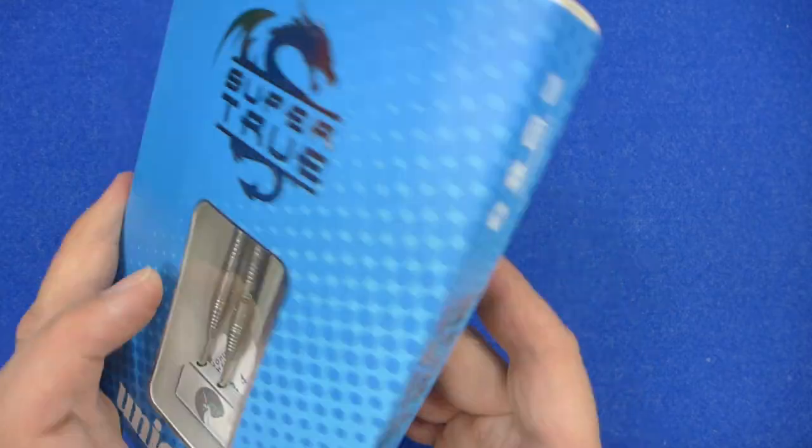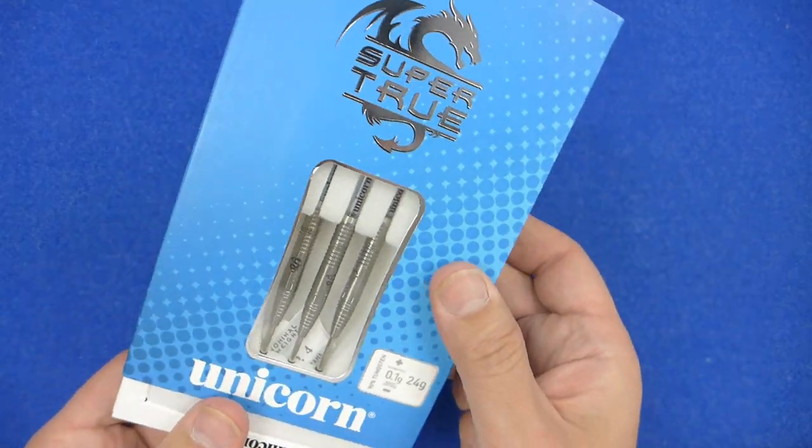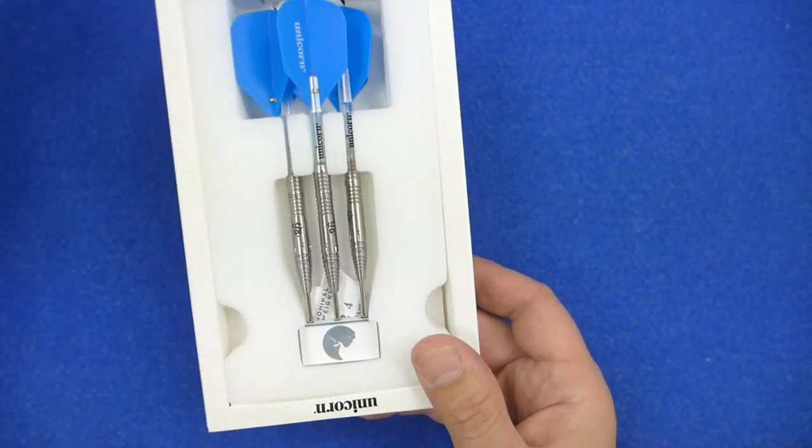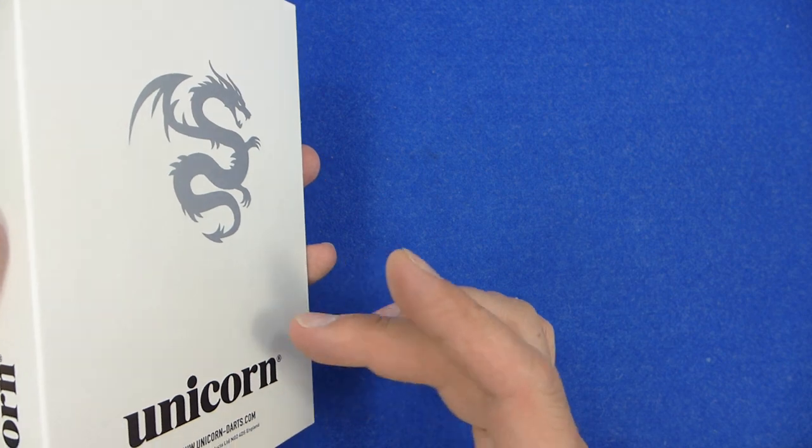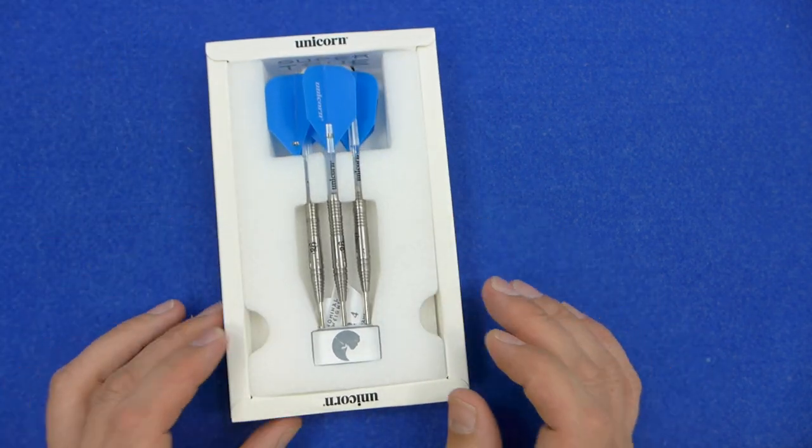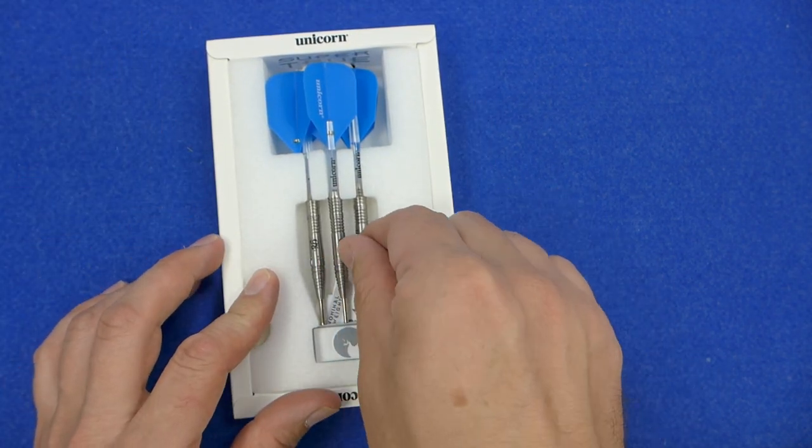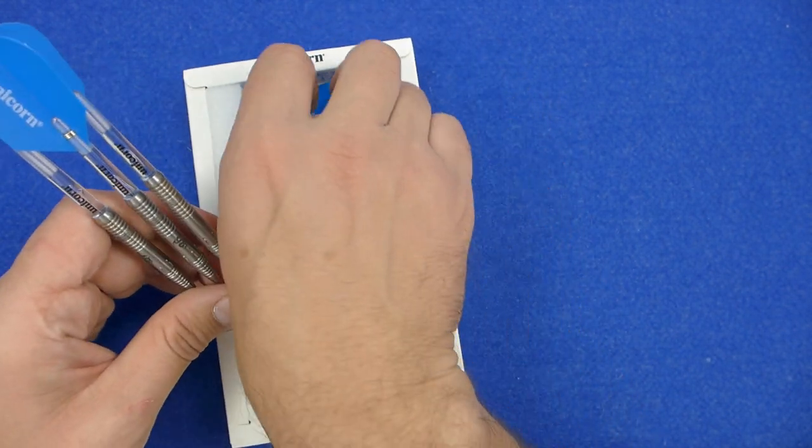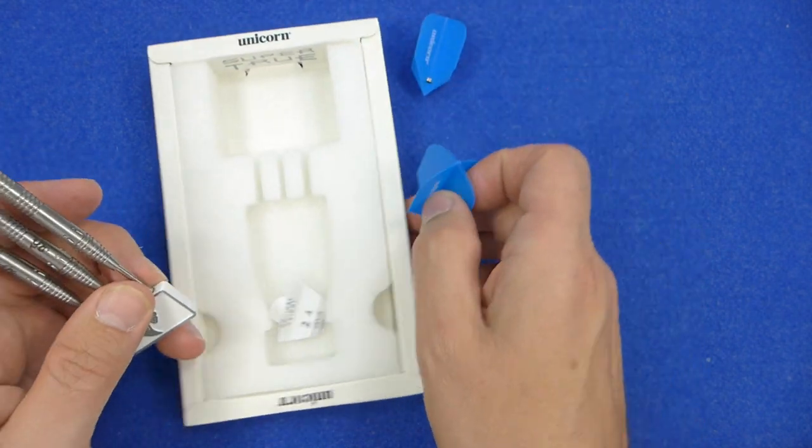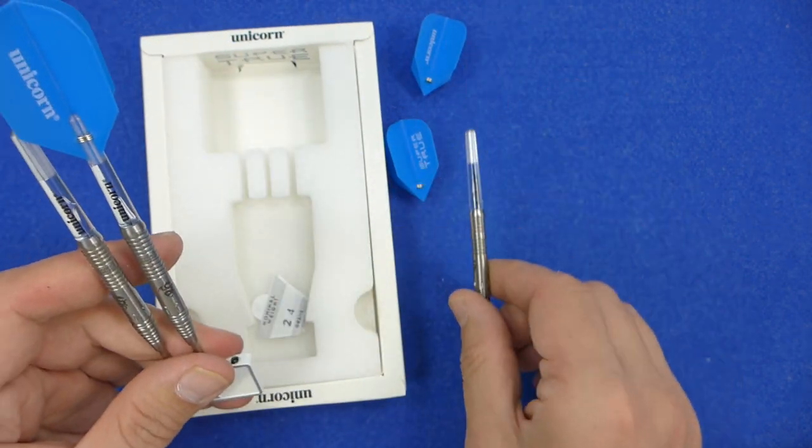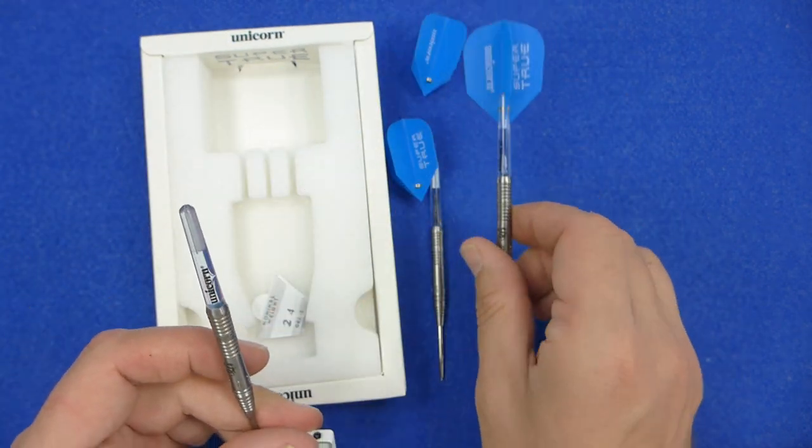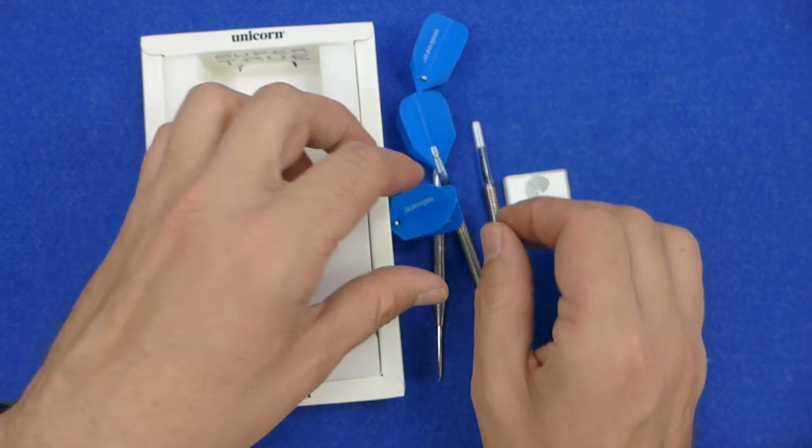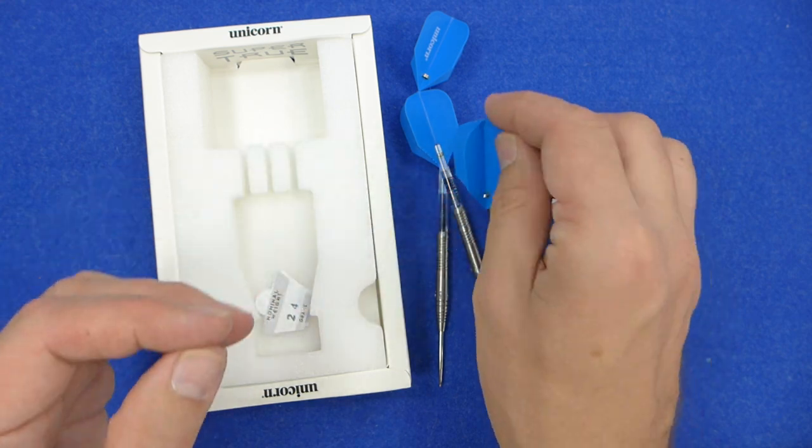The darts come in this fairly chunky box with an outer cardboard sleeve and inside is a hard cardboard tray with a dense foam insert containing all the contents. With the darts you've got an aluminium point protector, some Gripper 4 stems, and the Super True Blue flights.